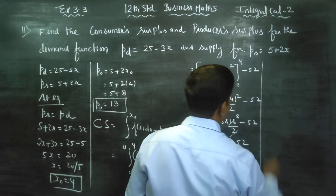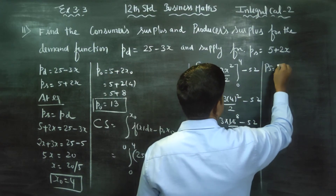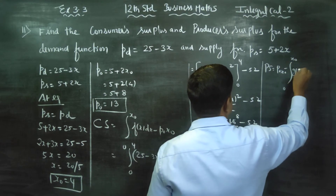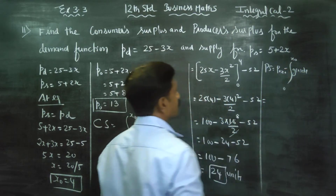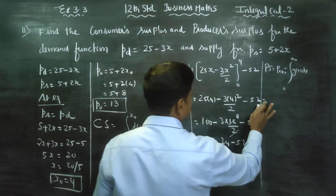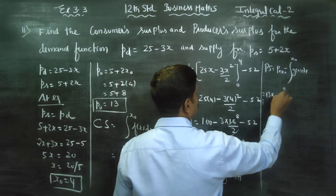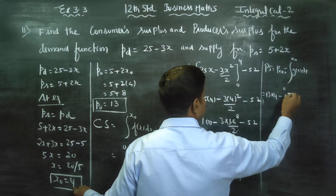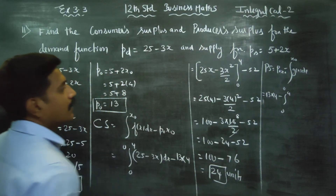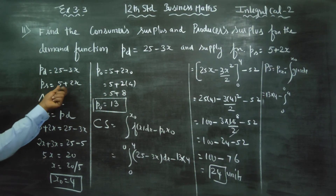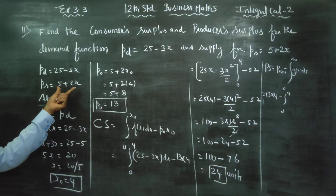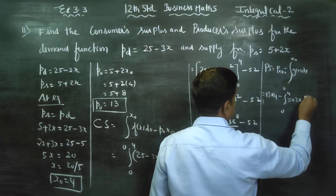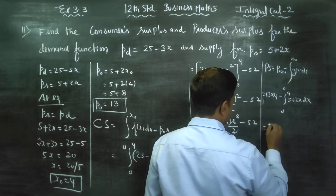After this, we have to find the producer surplus PS. The producer surplus formula is: P0 times X0, minus integration from 0 to X0 of G(X) dX. P0 is 13, X0 is 4, so 13 into 4 gives 52. Minus integration from 0 to 4 — G(X) for producer is the supply function: 5 plus 2X — dX. Evaluating gives 52.